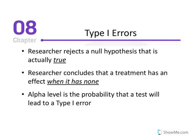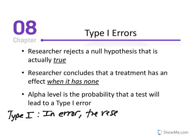The first type of error that is possible is referred to as a type 1 error. The characteristics of a type 1 error are as follows: the researcher rejects a null hypothesis that is actually true. The researcher concludes that a treatment has an effect when it has none. In short, a type 1 error occurs when, in error,